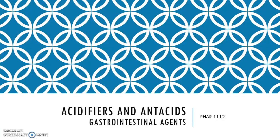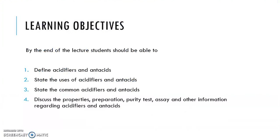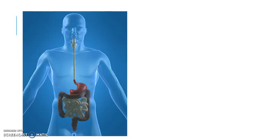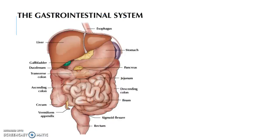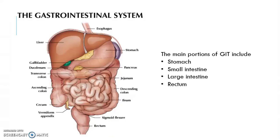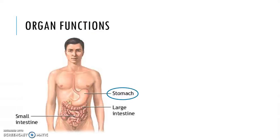Acidifiers and antacids — gastrointestinal agents. Let's start by introducing the gastrointestinal system, the GIT system, which includes the main parts: stomach, small intestine, large intestine, and rectum. For this topic, we will be discussing the stomach.